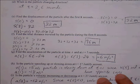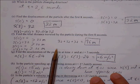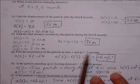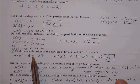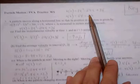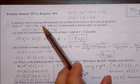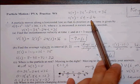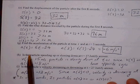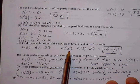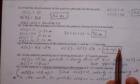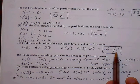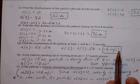Find the acceleration of the particle at t=3. We found the acceleration function at the beginning — the second derivative going from position to velocity to acceleration. Plugging 3 into the acceleration function: 18 minus 24 gives negative 6 meters per second squared. Note that acceleration has units of units per time squared.